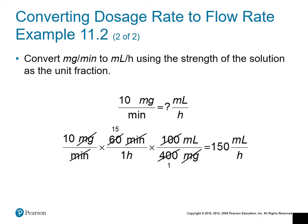We're going to use the strength to do this conversion. Starting with 10 milligrams per minute, our first unit fraction changes the time from minutes to hours. Our next fraction is the strength — 400 milligrams per 100 milliliters — flipped so milligrams are in the denominator and divide out. What's left is milliliters over hours. The numbers give you 150, so the answer is 150 milliliters per hour.